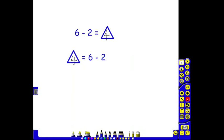And again, the triangle is in place of the number 4, because 4 is the same as 6 take away 2.